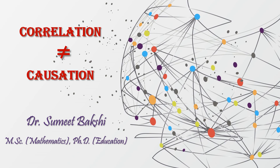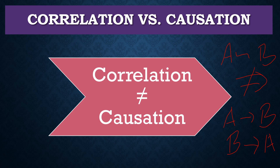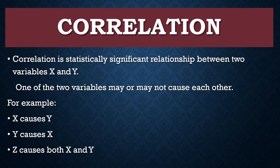These two words are often mixed up, but these two terms are really different. If two variables are related, it is not always true that one variable is causing the other. Correlation is a statistically significant relationship between two variables X and Y. One of the two variables may or may not cause each other.